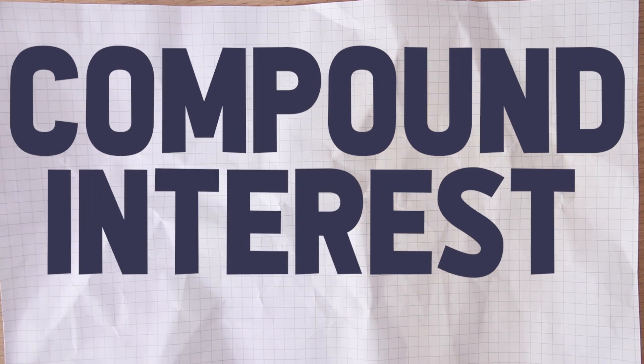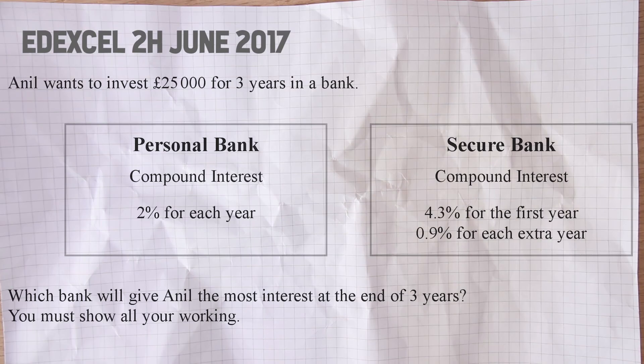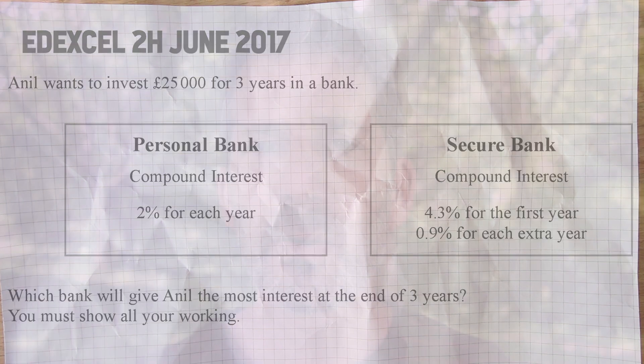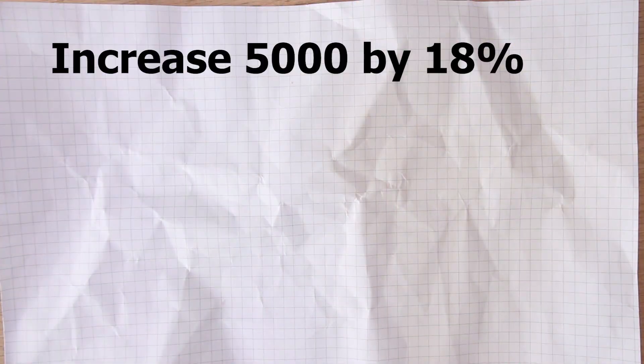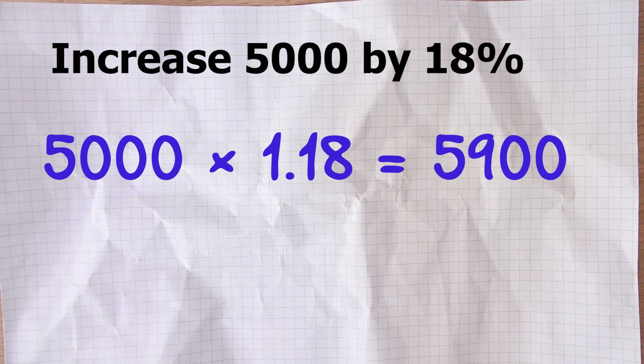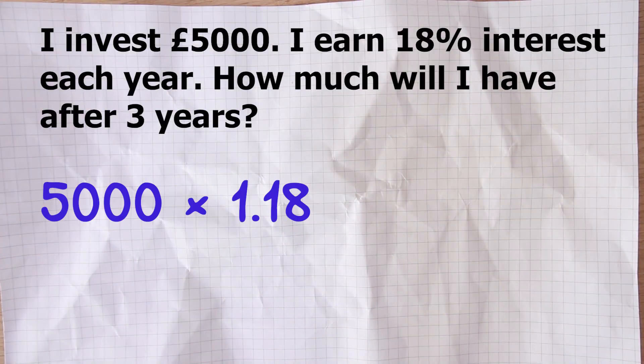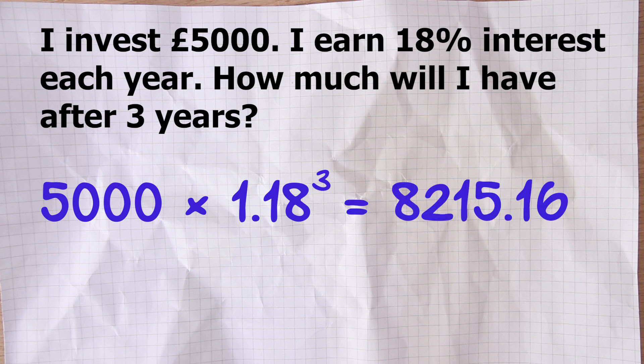The second thing: compound interest. This might be a reasonably straightforward question where they give you two different offers that a bank is making with different interest rates and ask you to compare them. It's a reasonably simple process — you might find it useful to use a multiplier. For example, if you want to increase something by 18 percent, you multiply by 1.18. If you want to do that over multiple years — say, increasing by 18 percent every year for three years — you would multiply by 1.18 cubed.